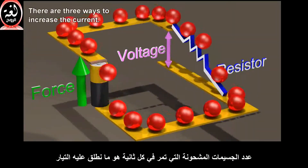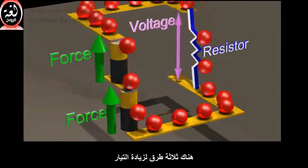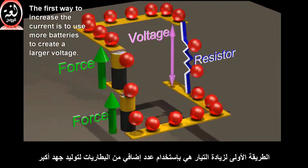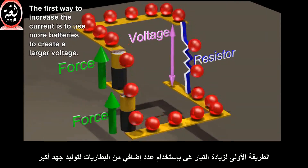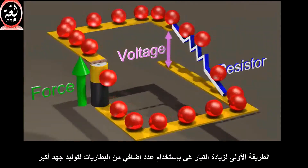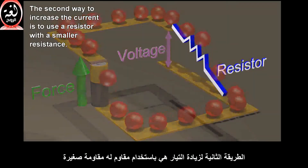There are three ways to increase the current. The first way is to use more batteries to create a larger voltage. The second way is to use a resistor with a smaller resistance.